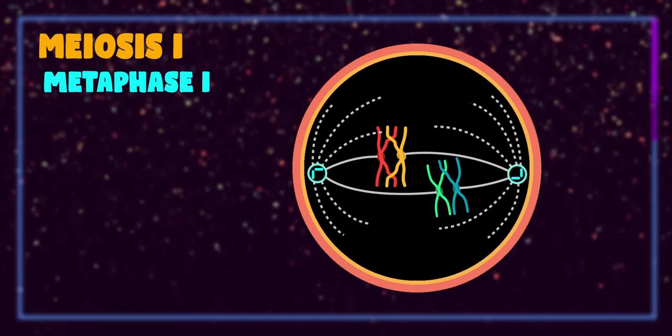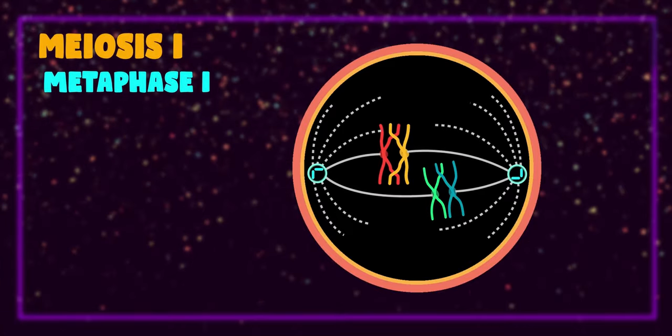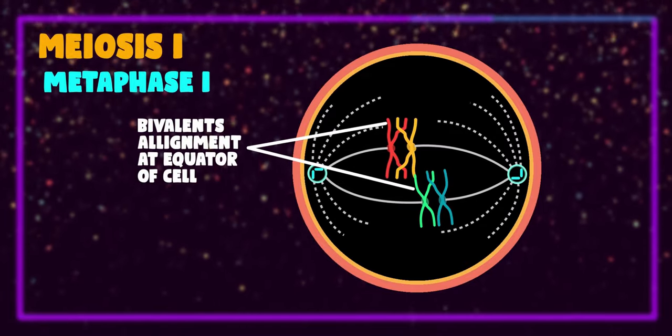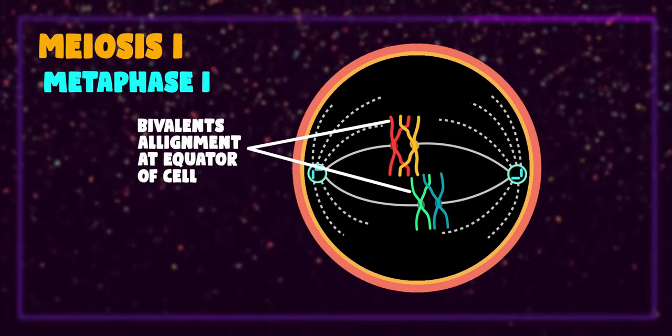The next phase is metaphase one, in which the bivalents are aligned to the equator of the cell. This alignment of bivalent is called double metaphasic plate.